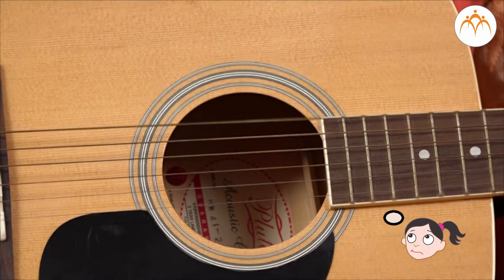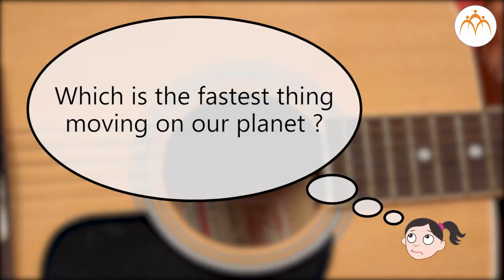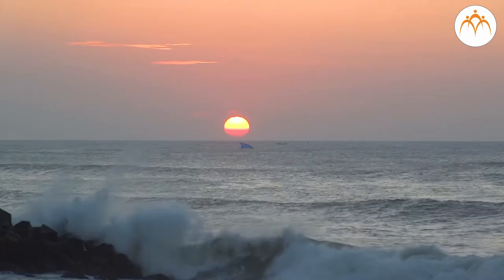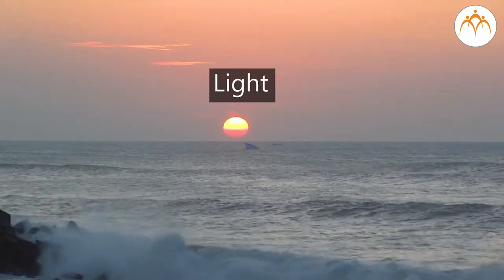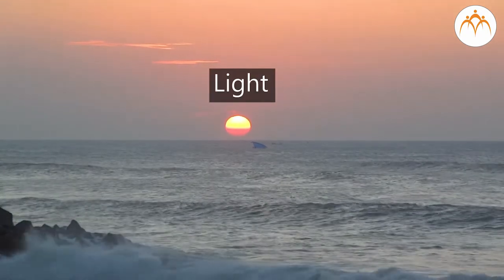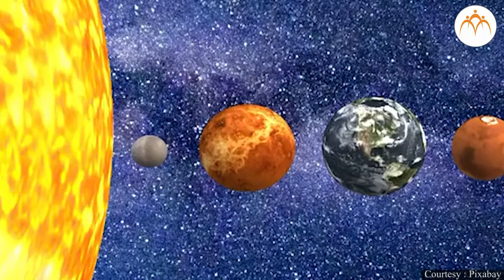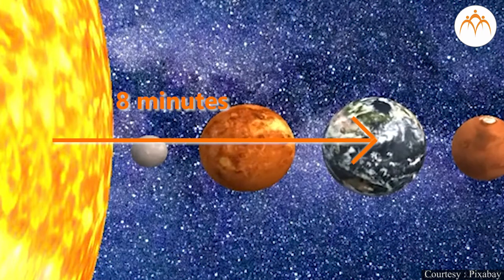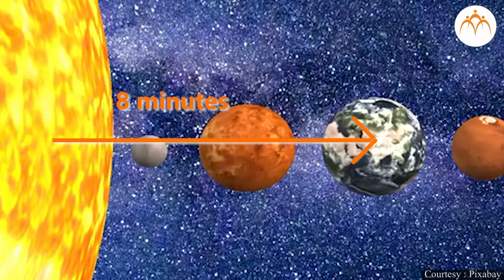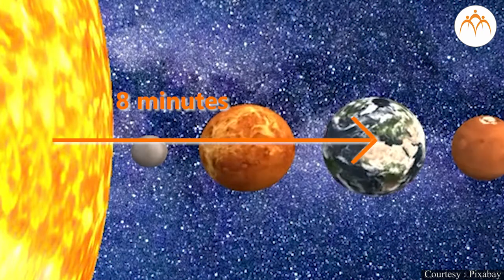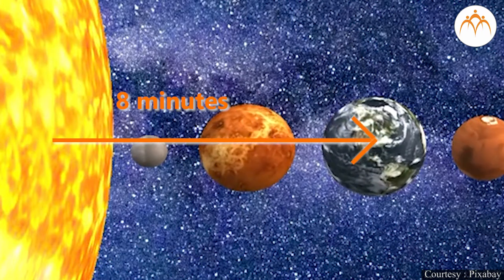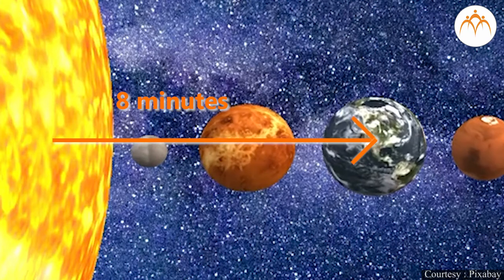Can you guess which is the fastest thing moving on our planet? It is light, which is the fastest. It reaches us from the Sun in just under eight minutes. Without movement, nothing would ever happen.